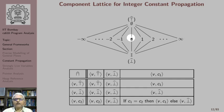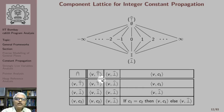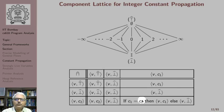It is easy to see what the meet is. If along one path the value is top, then the result is the same as the second argument. If one argument is bottom, the result is bottom. The interesting case is only when one argument is a constant value: if the other is top, the value remains the same constant; if the other is bottom, the result is bottom; if C1 equals C2, the result is C1, otherwise the result is bottom.